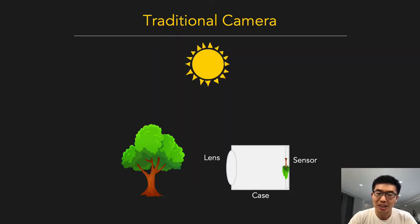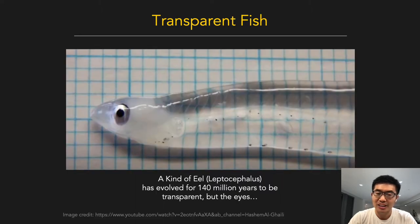A traditional camera is composed of lens, a sensor, and a case. It is not transparent. This interesting feature is quite remarkable — eyes have evolved for 140 million years to be transparent, but it might feel difficult to replicate for cameras.